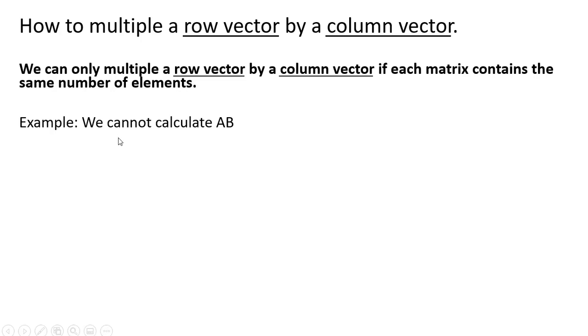Here's an example where we cannot multiply a row vector by a column vector. Row vector A has four elements, one, two, three, four. Column vector B has three elements, so the number of elements differs here, so we cannot multiply matrix A by matrix B.